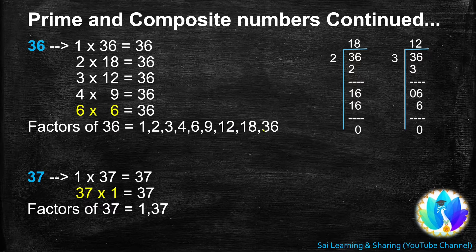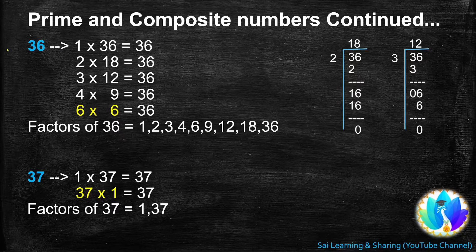A number with more than two factors is a composite number. So 36 is a composite number.